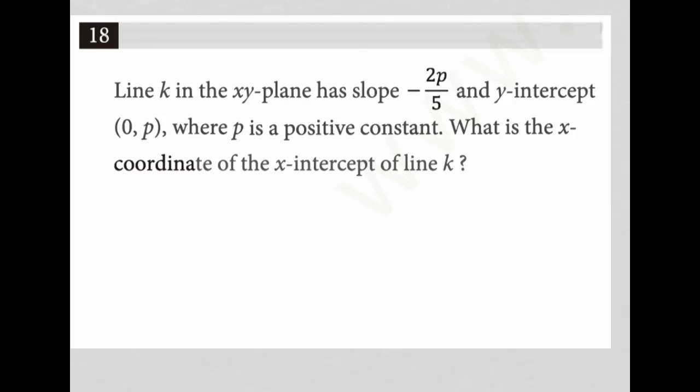This question says line K in the XY plane has slope negative 2P over 5 and Y intercept 0 comma P, where P is a positive constant.